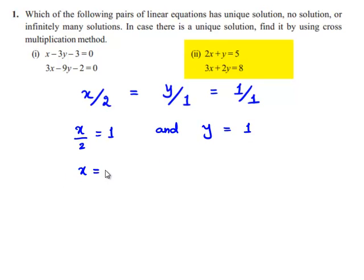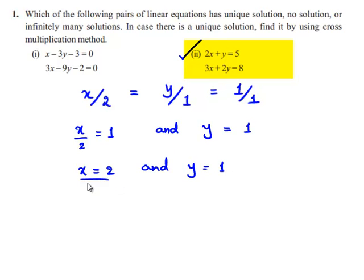So, we can write x is equal to 2 and y is equal to 1. Therefore, the solutions for the given set of linear equations are x is equal to 2 and y is equal to 1.